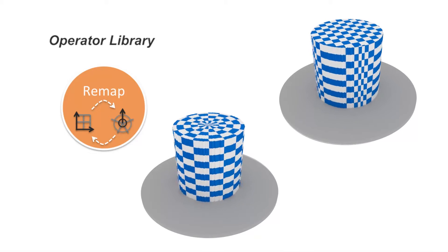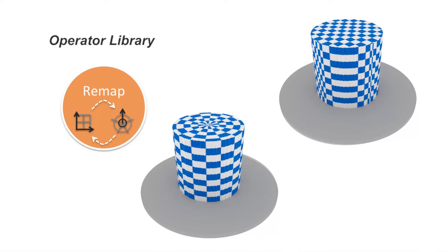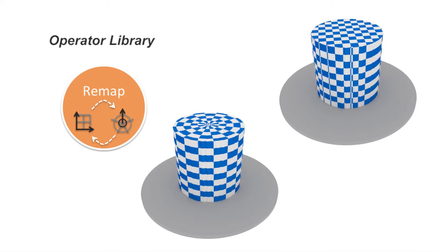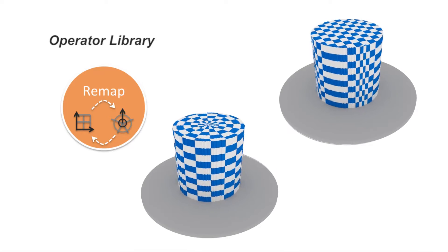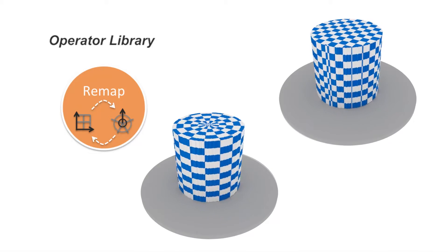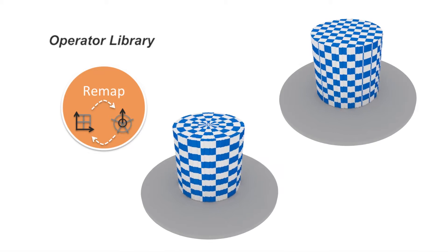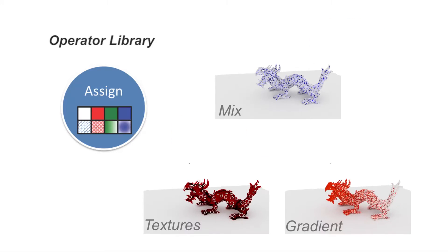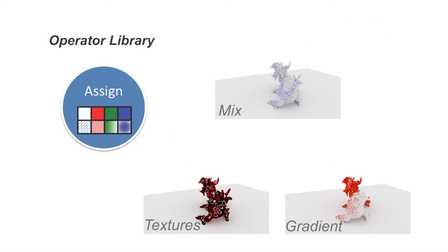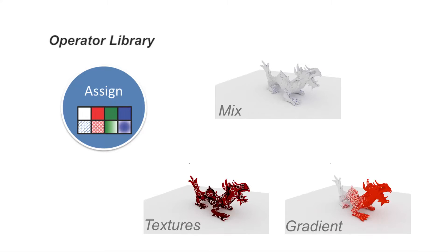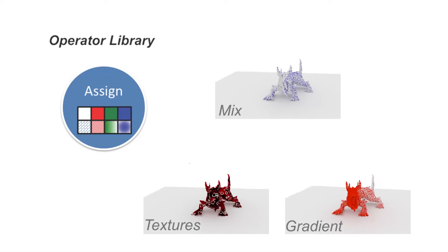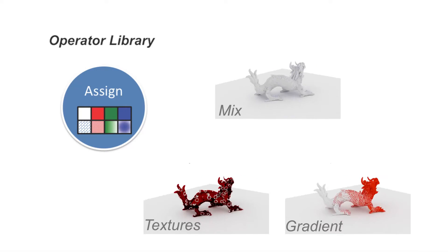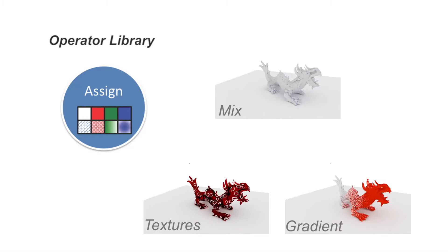As for remapping operators, they transform the space by modifying coordinate systems. For example, a linear rectangular lattice can be warped around a cylinder with a cylindrical mapping, effectively producing a cylindrical lattice. Finally, assignment operators assign the material composition to the selected subspace and provide ways to mix and grade material properties, such as with uniform or gradient mixing.